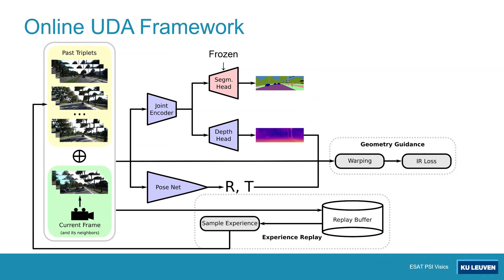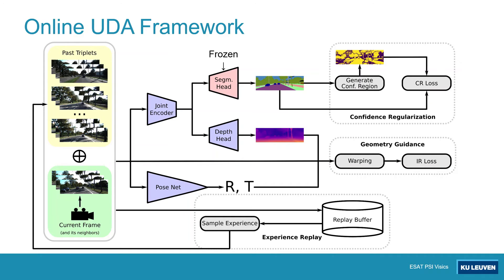In addition to geometric guidance, we regularize the predicted semantics in order to prevent learning more geometrically but less semantically correct representations. For this, we first estimate the confidence region based on the predicted class probabilities for each pixel — for instance, using a class-adaptive probability threshold. Then, confidence regularization loss is computed as the average entropy of pixels in the estimated confidence region.